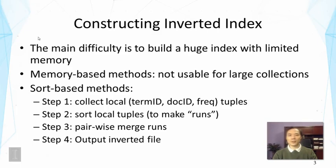A sorting-based method is quite common and works in four steps. First, you collect local term ID, document ID, and frequency tuples by counting terms in a small set of documents. Once you collect those counts, you sort them based on terms to build a partial inverted index. These partial indexes are called runs, and you write them into temporary files on disk.